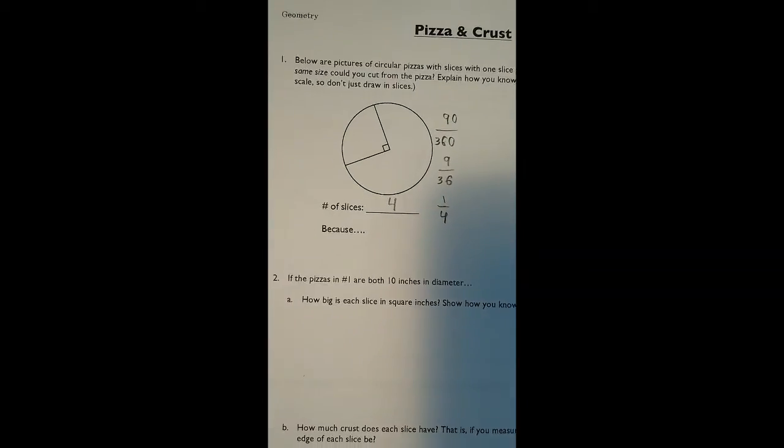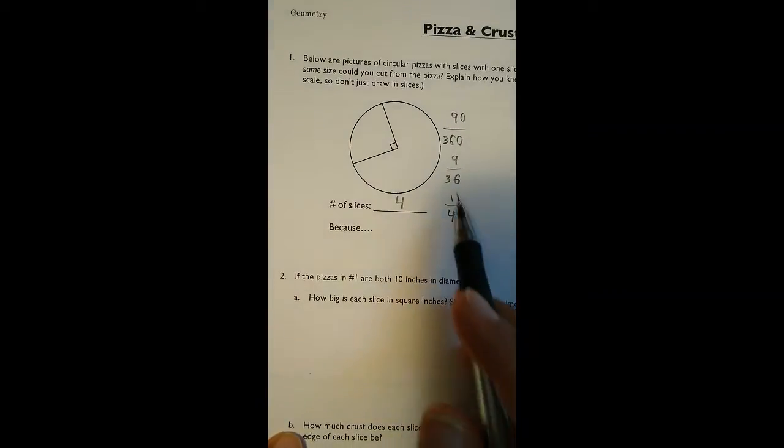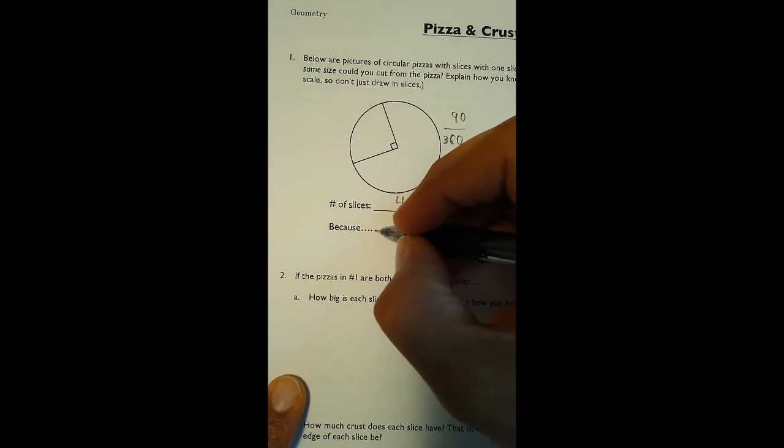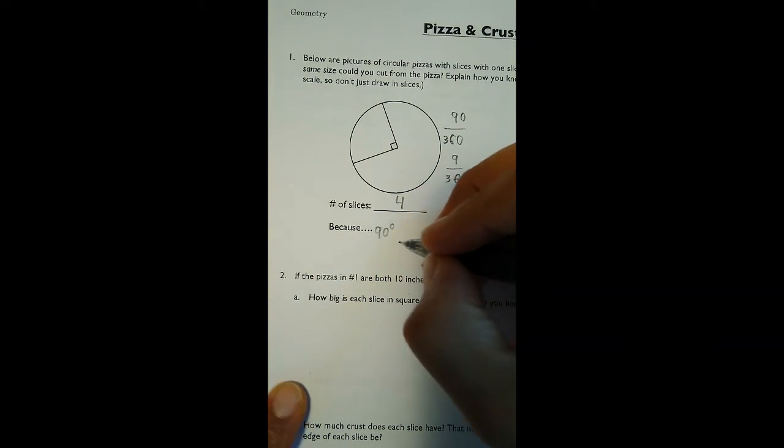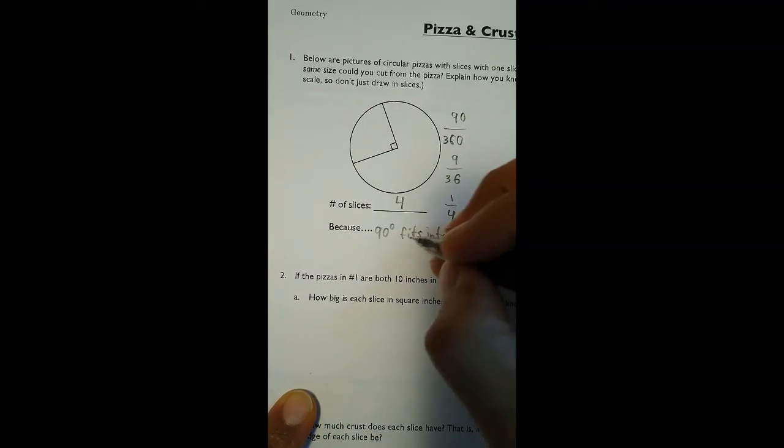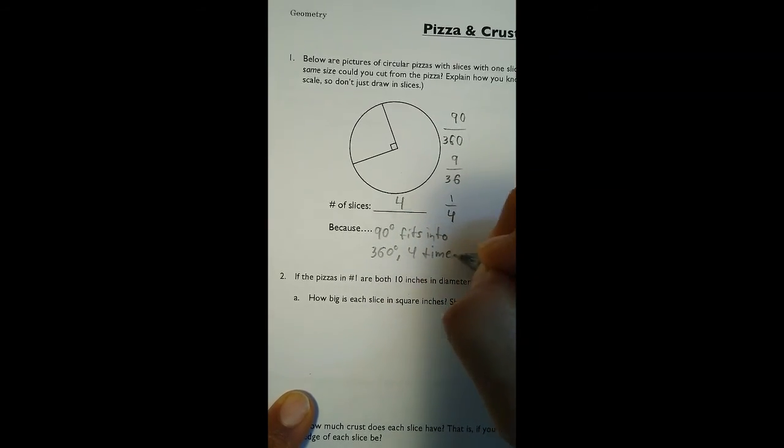So over here for this one, how do we know that we can fit four slices? 90 degrees fits into 360 four times.